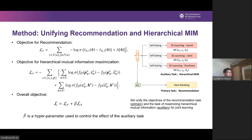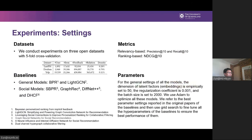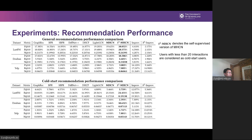Under this joint learning framework, the recommendation task can obtain significant performance improvement. To validate our method, we perform extensive experiments on three open datasets for social recommendation. We also choose a set of strong baselines for comparison. Three metrics are used to measure performance, and the hyperparameters are fine-tuned for a fair comparison. We first show the performance improvement on both the general and cold-start cases. As you can see, in both cases, MHCN shows the best results compared with the baselines, and the self-supervised MHCN shows even better performance. Particularly in the cold-start case, the improvements are significant, which demonstrates the necessity of integrating high-order relations and the advantages of using self-supervised learning to mine the inherent patterns in hypergraphs.